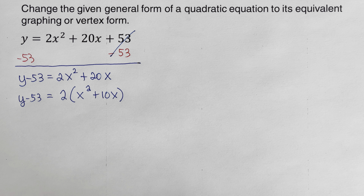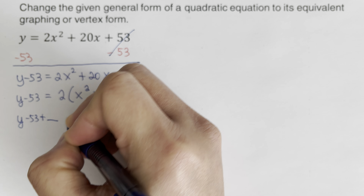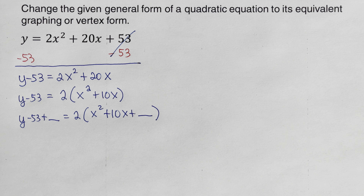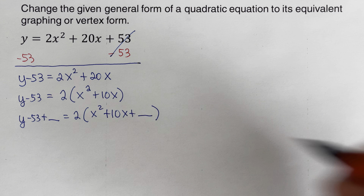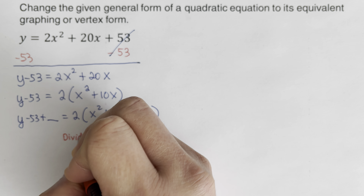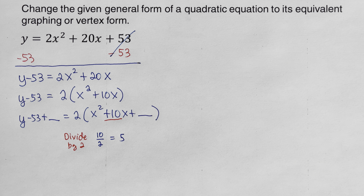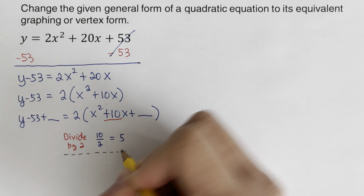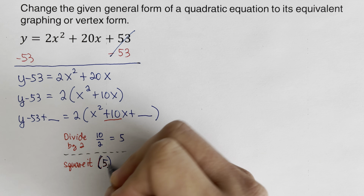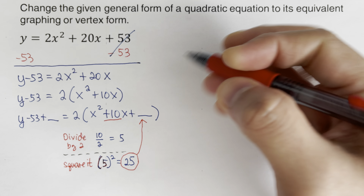Now we complete the square. Adding blanks to both sides: y minus 53 plus blank equals 2(x squared plus 10x plus blank). To find the blank, take the coefficient of the middle term, which is 10, divide by 2 to get 5, then square it to get 25. So 25 goes in the blank inside the parentheses.